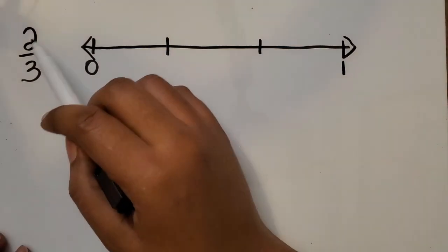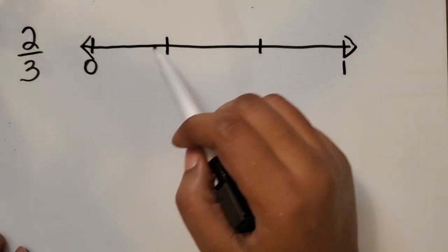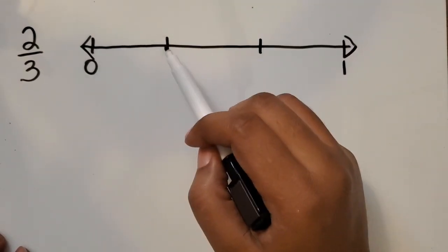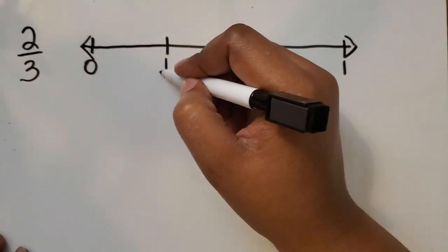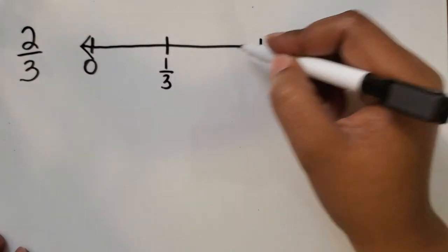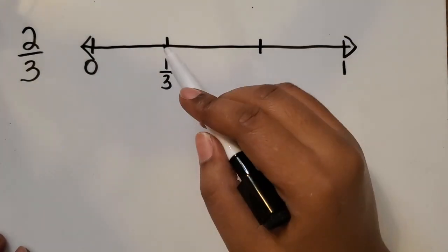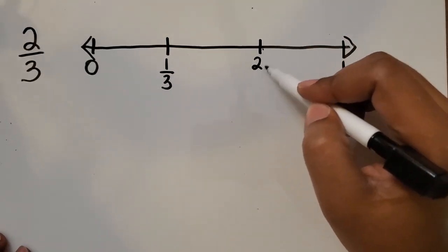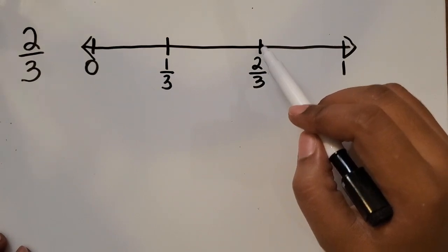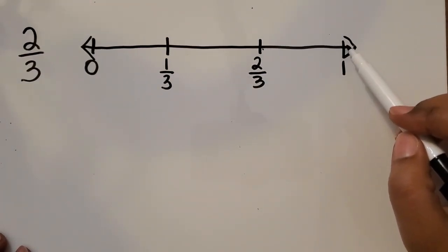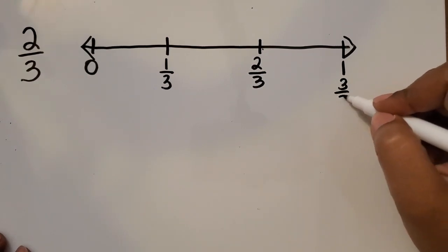Now we just want to show where two-thirds would be on the number line. So if this is a whole, we know this first space from zero to this first tick mark is going to be the first third — one out of the three-thirds. If we go to this tick mark from one-third, that's going to be the second third. And then from here all the way to this last tick mark is going to be one whole, or three-thirds.